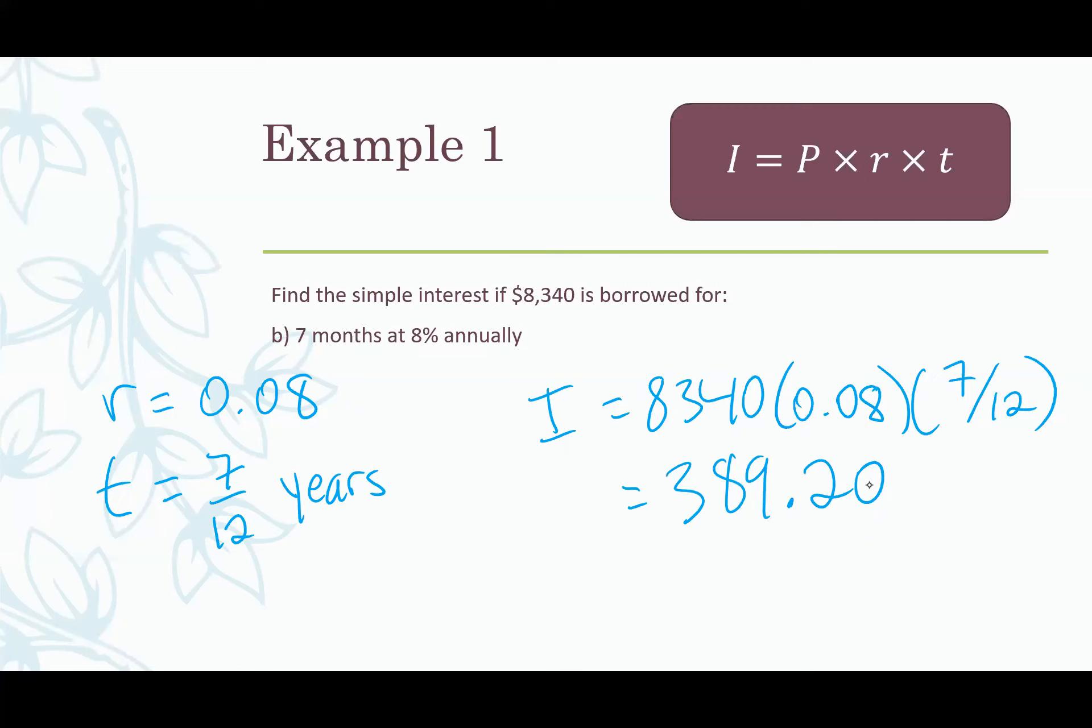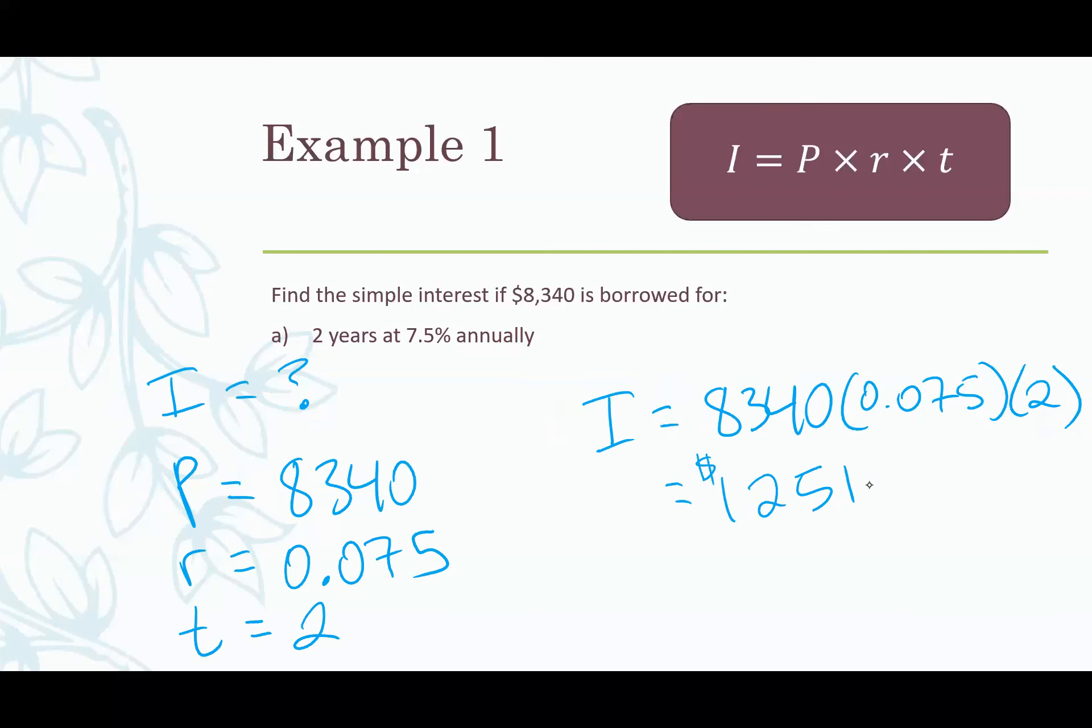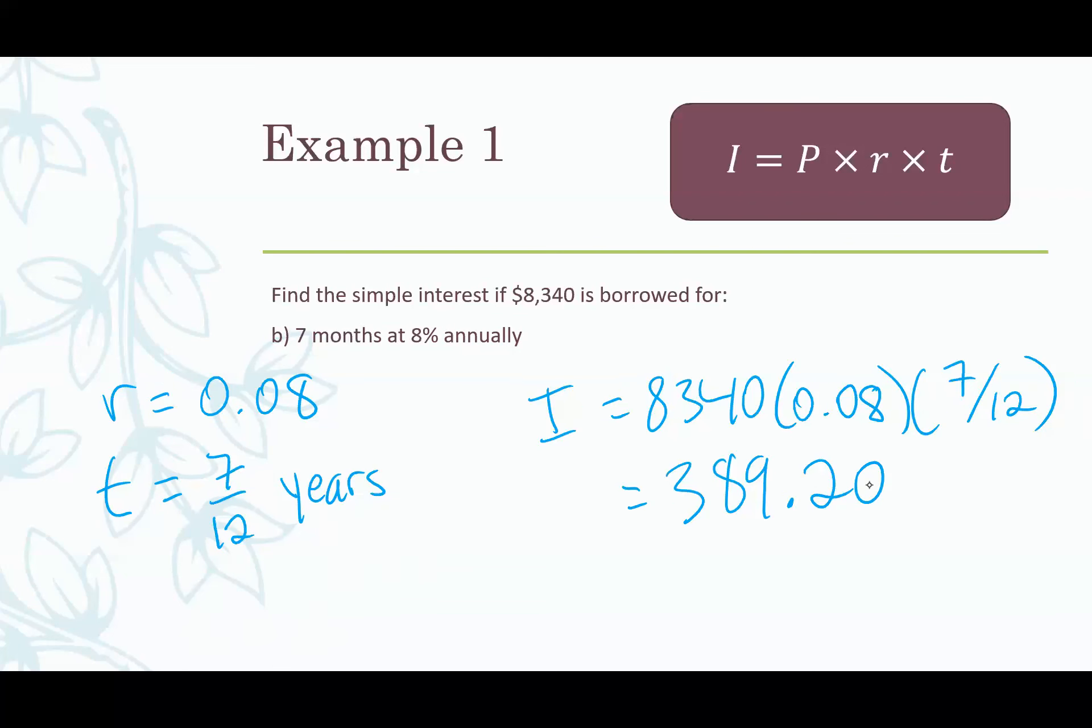Because remember time is always in years. This is given in seven months. We don't put seven in for t because that would represent seven years. We had to write it as 7/12 years because it's seven months out of 12 months. So you put it in as that fraction, throw that into your calculator and you get about $389. And that makes sense that this value is a lot less because it's only seven months when the other one was two years. So it makes sense that it's a smaller number.